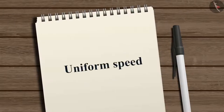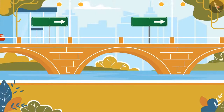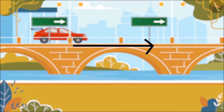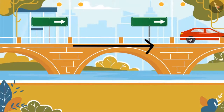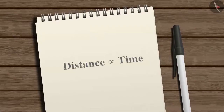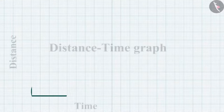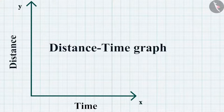First, we consider uniform speed. If an object is moving with uniform speed, it covers equal distances in equal time intervals, meaning distance is directly proportional to time taken. Let's start plotting the graph.